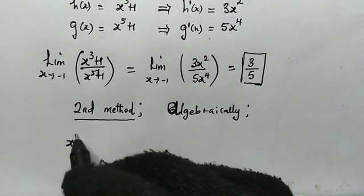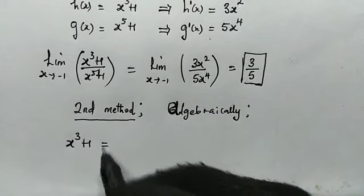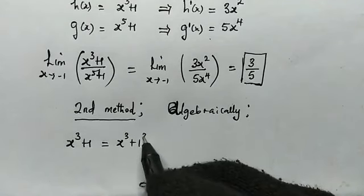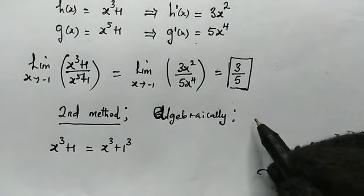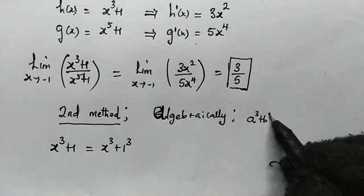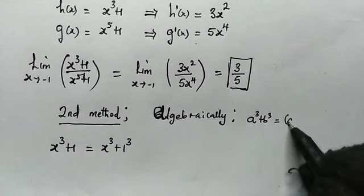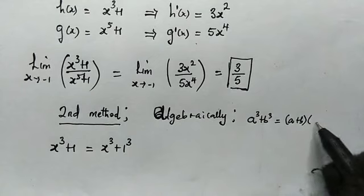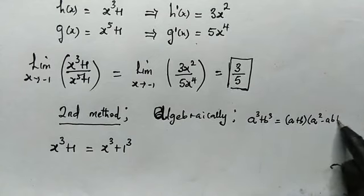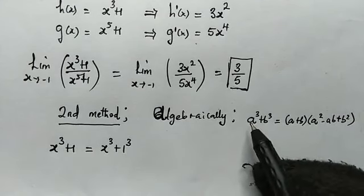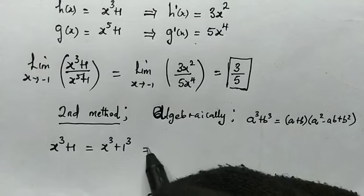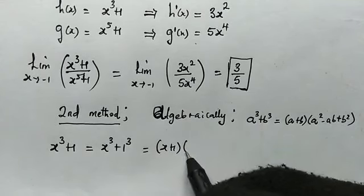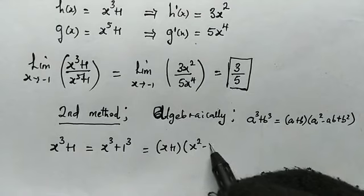Starting with the numerator, x cubed plus 1, we apply the sum of two cubes formula: a cubed plus b cubed equals (a plus b)(a squared minus ab plus b squared). Letting a equal x and b equal 1, we get x cubed plus 1 equals (x plus 1)(x squared minus x plus 1).